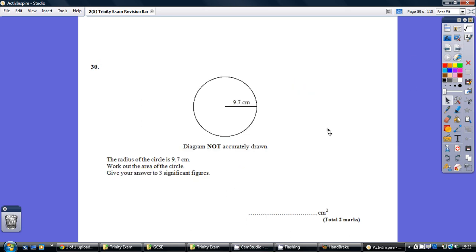Right, question 30. Another circle question. Have a go. Area is pi r squared, so pi times the radius times the radius.